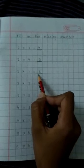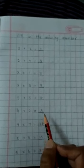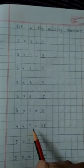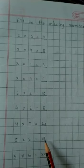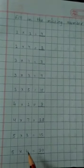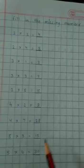3 ones are 3. 3 threes are 9. 3 fives are 15. 4 twos are 8. 4 sevens are 28. 5 threes are 15. 5 sixes are 30.